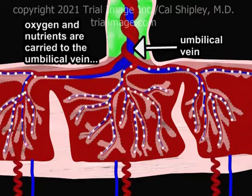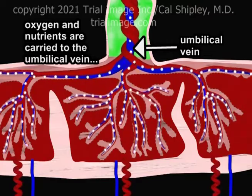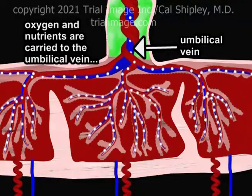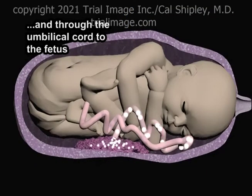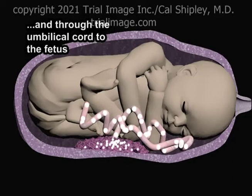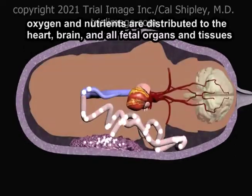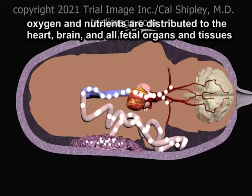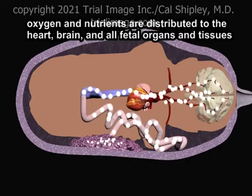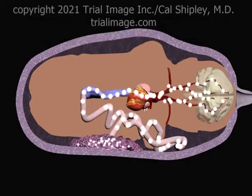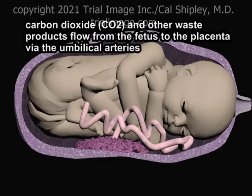From villus capillaries, oxygen and nutrients are carried to the umbilical vein and through the umbilical cord to the fetal circulation. Oxygen and nutrients are then distributed to the heart, brain, and all fetal organs and tissues. Simultaneously, carbon dioxide and other waste products flow from the fetus to the placenta via the umbilical arteries.